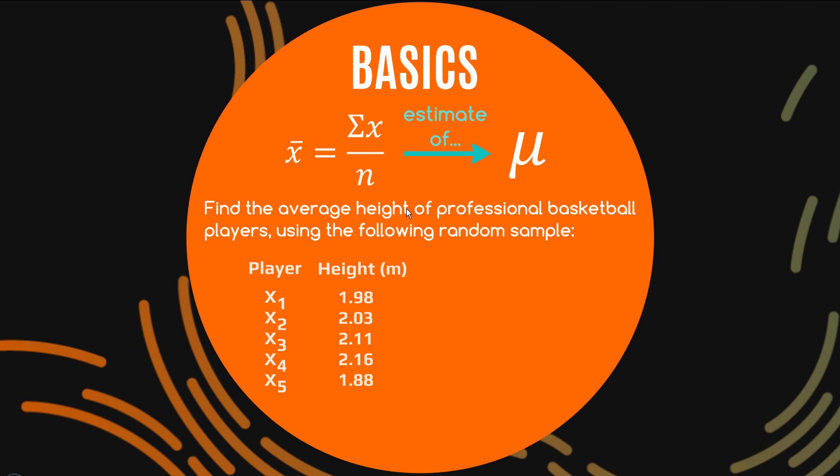So for example if we're to find the average height of professional basketball players using this following random sample you can see we have five players in our sample each of their heights given here and we can use that formula fairly straightforward sum everything up divide by five and we find that the average height in the sample x bar is 2.032 meters.